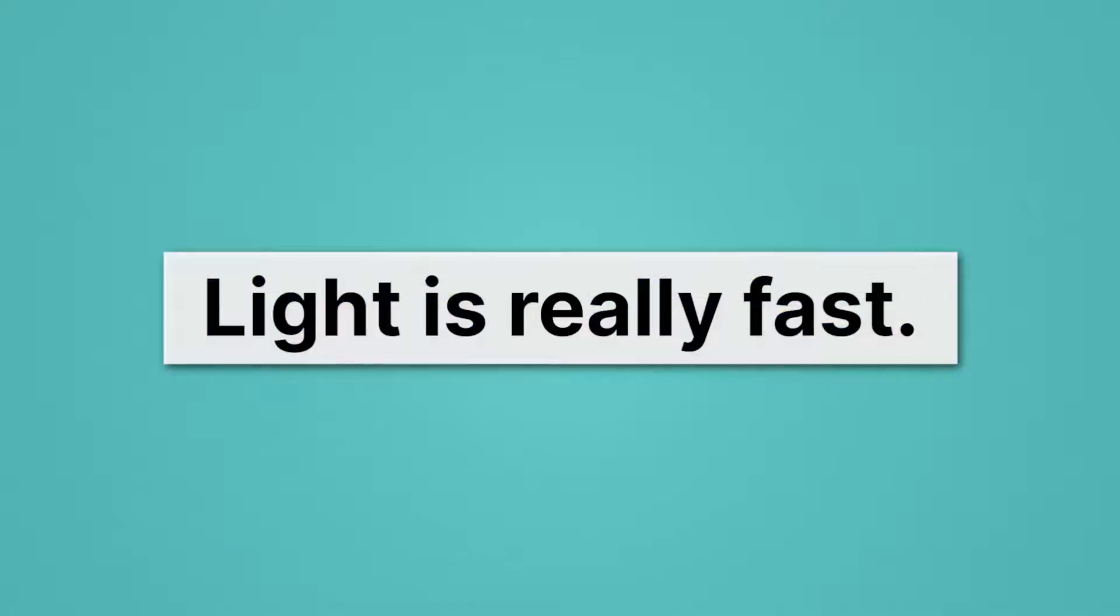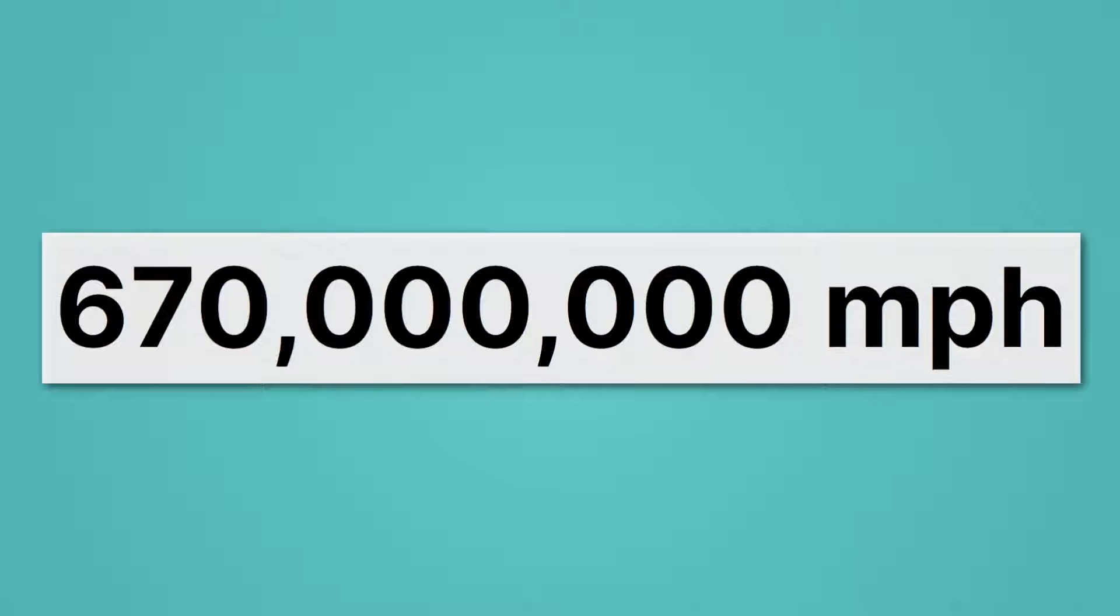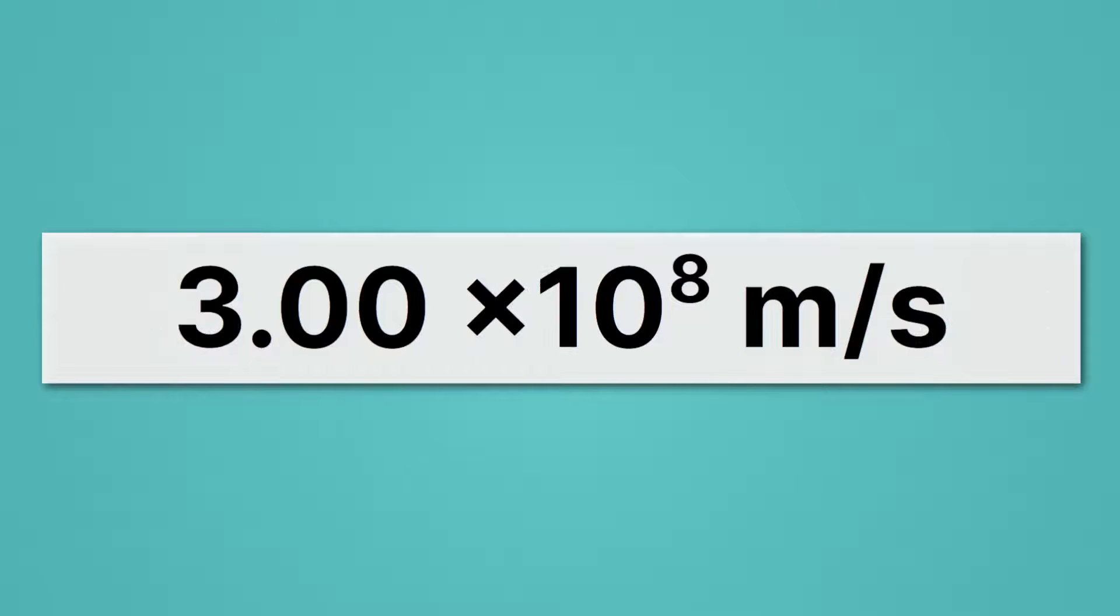The movies are always talking about going light speed, and for good reason. If you want to travel the stars, you need to go really fast, and light speed turns out to be the fastest you can go. Okay, so light is really fast, but how fast exactly? It moves at 670 million miles per hour. But we don't usually use miles per hour in our science class. In meters per second, light moves at 3.00 times 10 to the eighth meters per second.